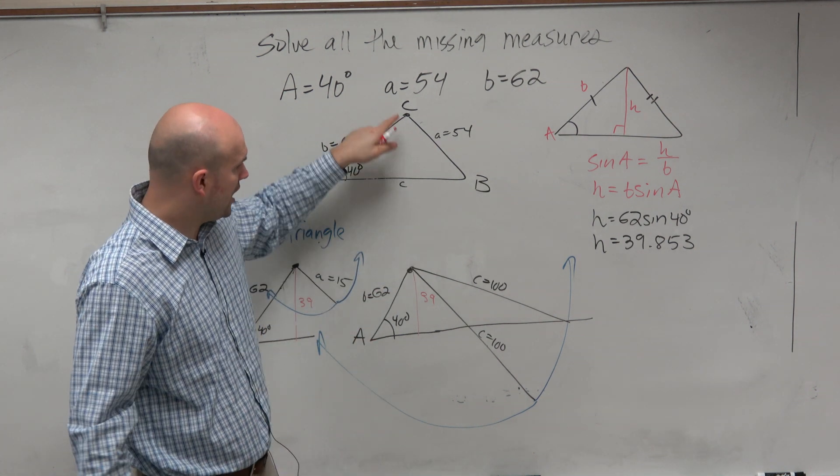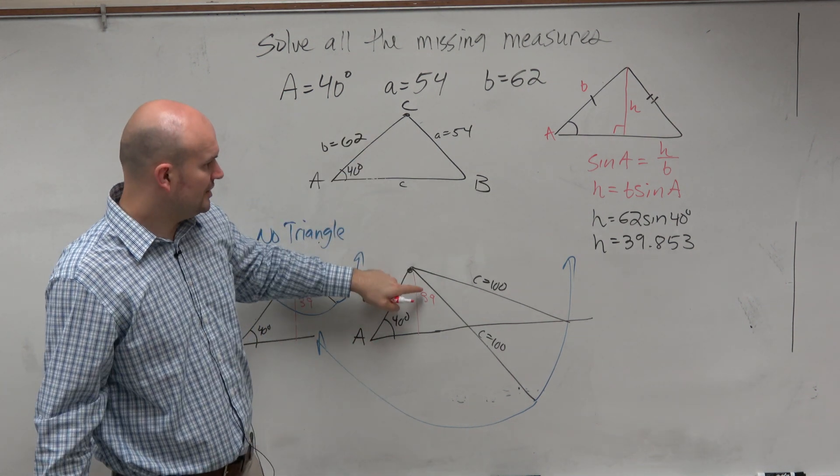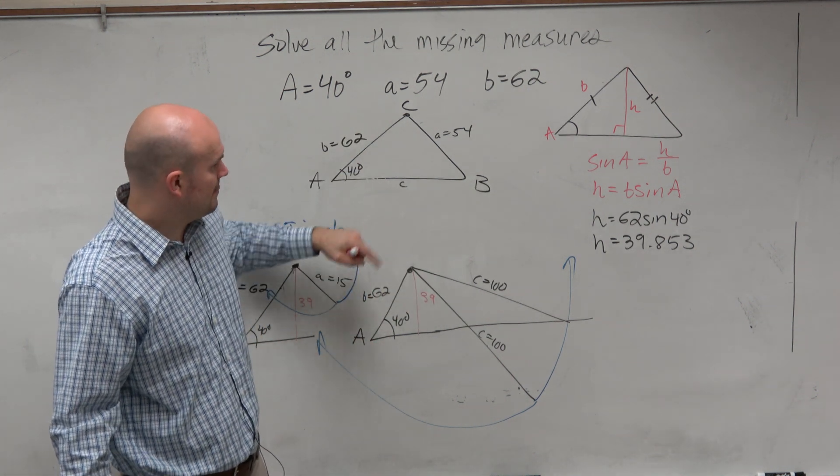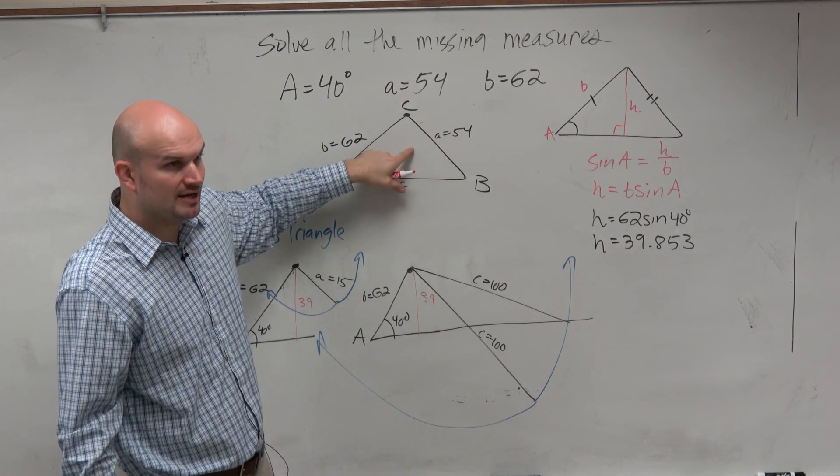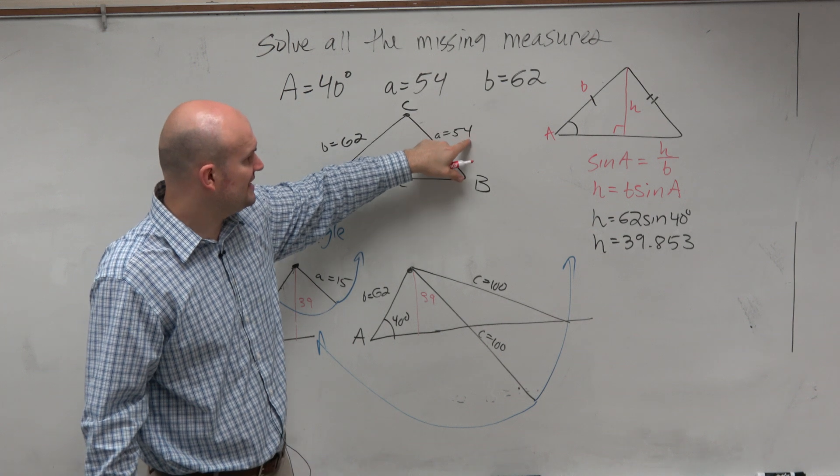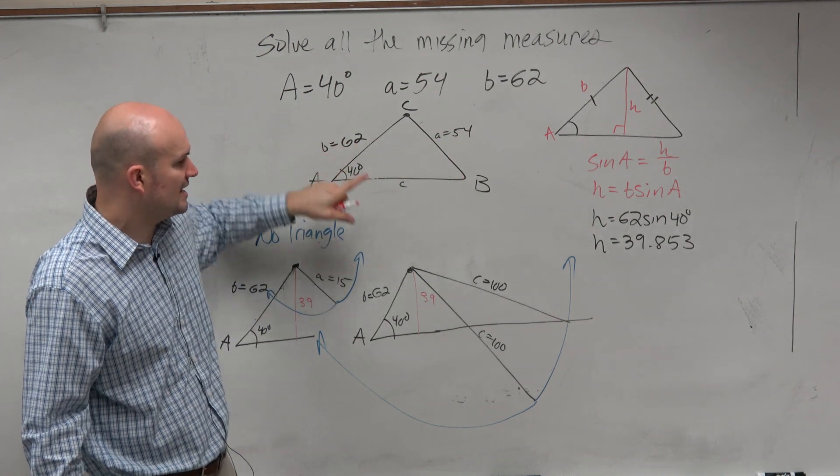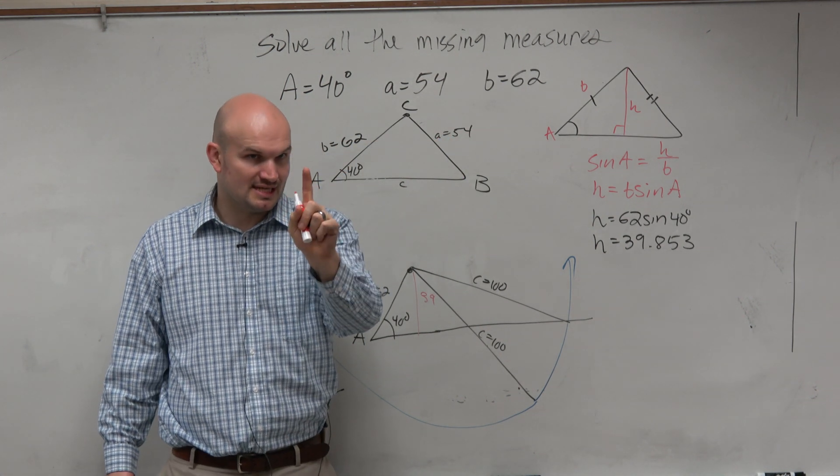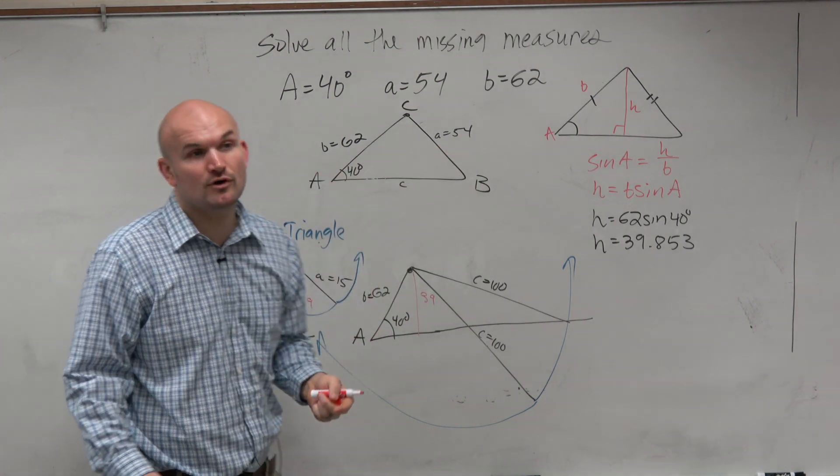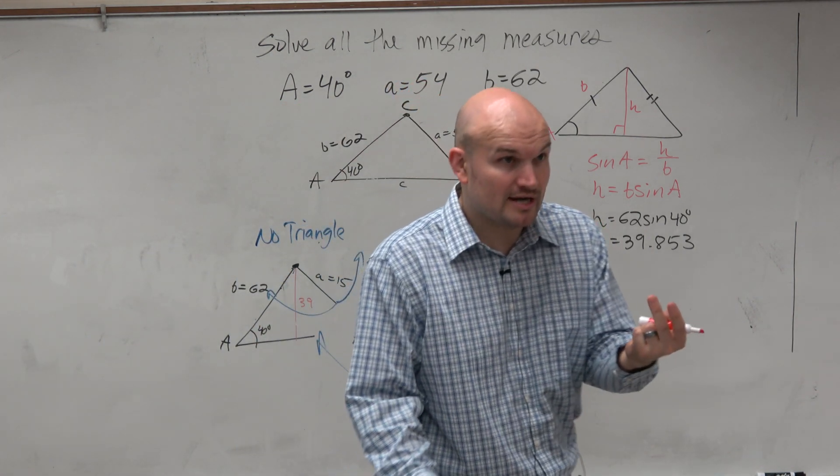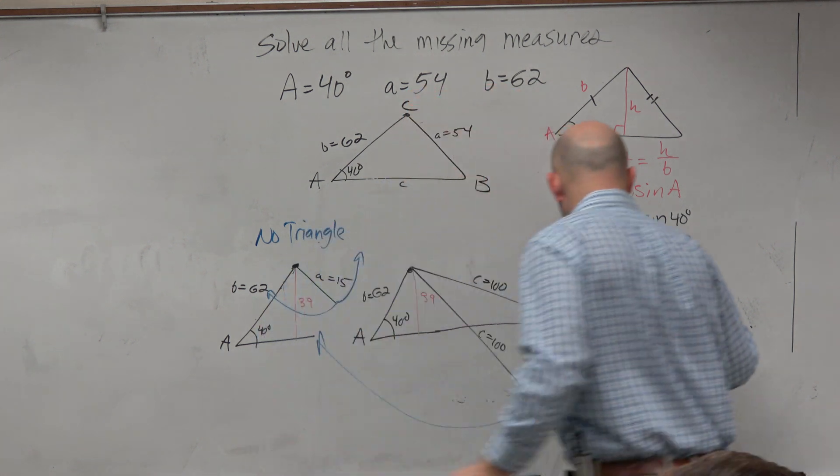So therefore, the idea is if we find our height, that makes it no triangle. If we compare this side is obviously bigger than the height, we know that the triangle exists. But if this is larger than the other side, we know only one triangle exists. So if this side is less than that, then we know that two triangles are going to exist.